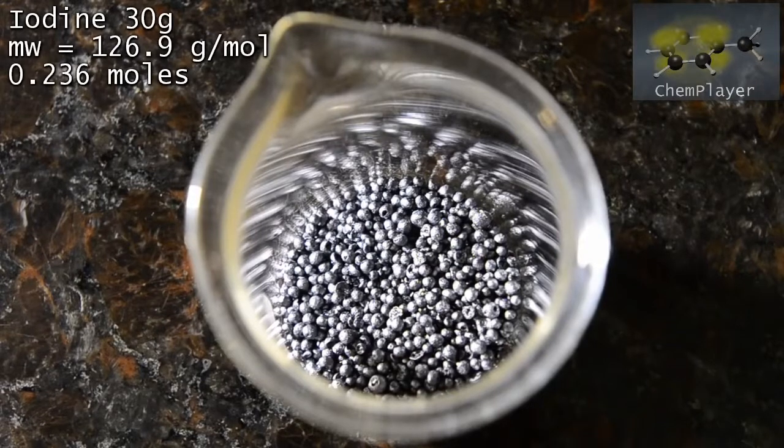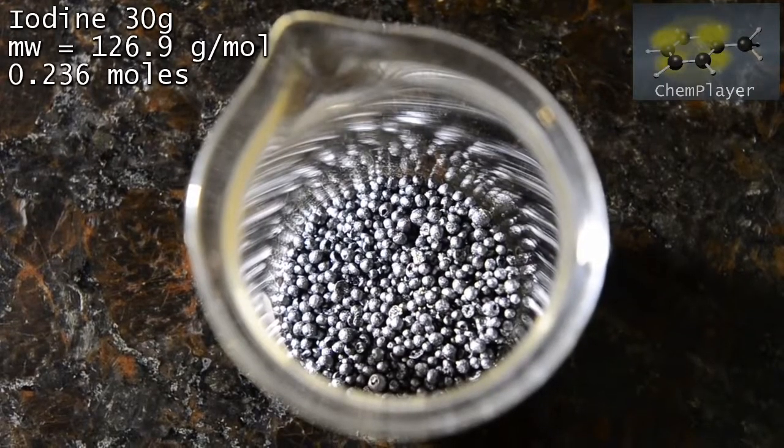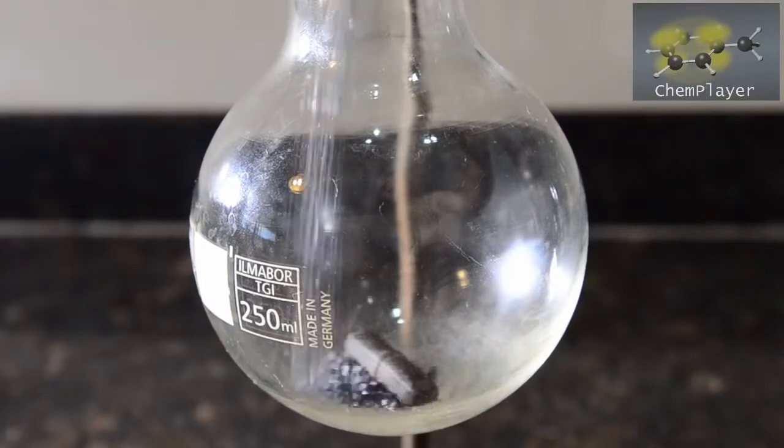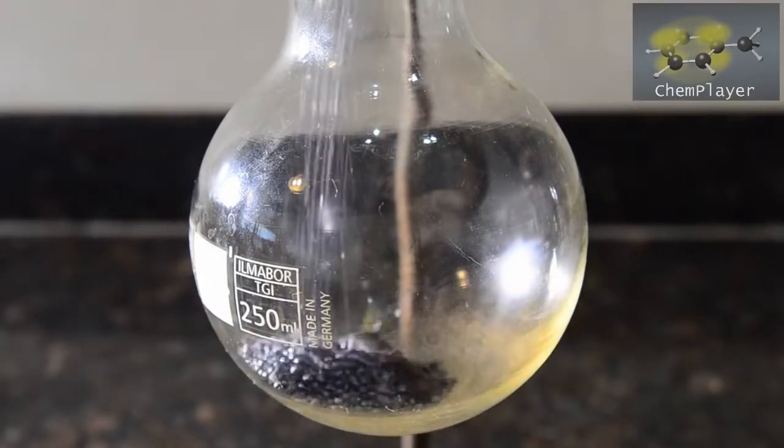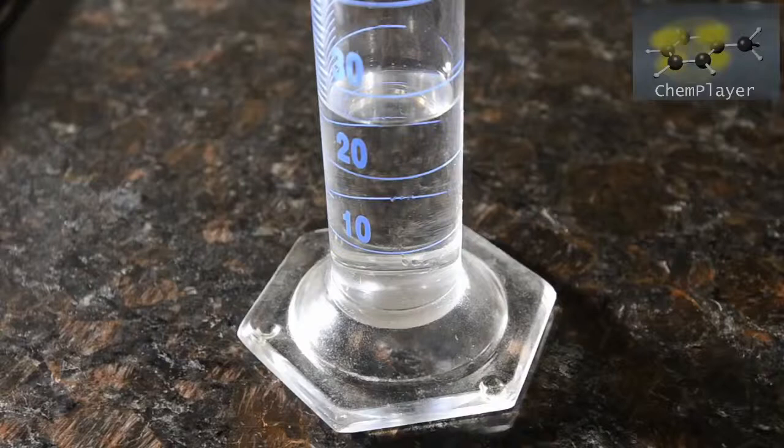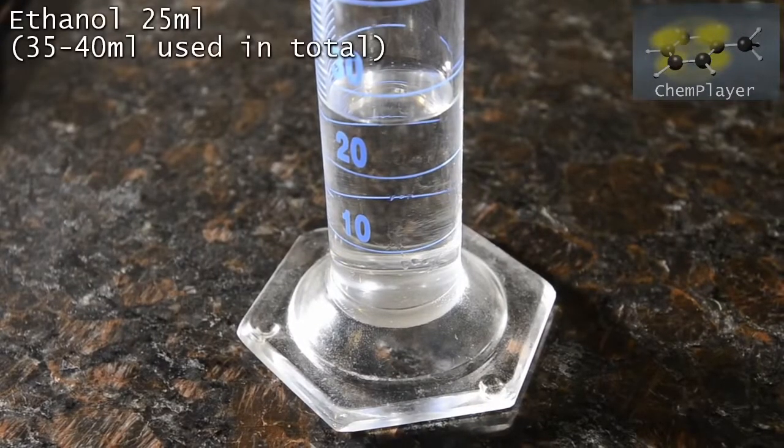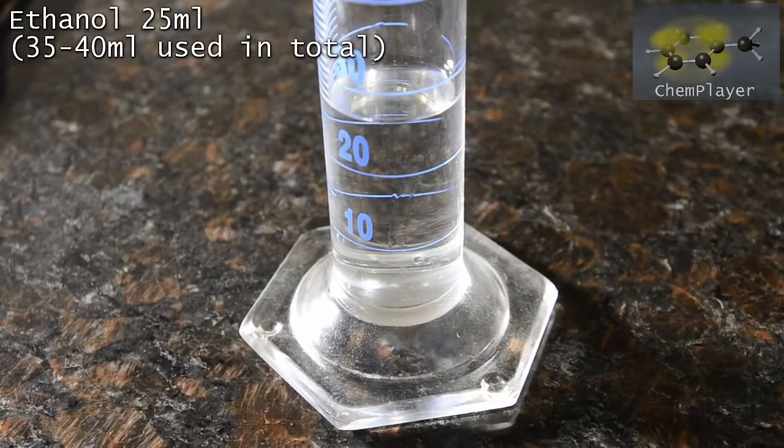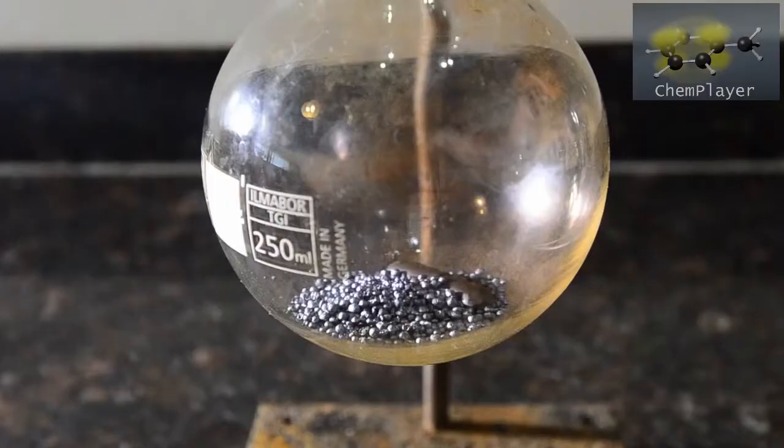We're starting with 30 grams of solid iodine, placing it in a dry 250ml flask equipped with a magnetic stir bar. We're going to start off with 25ml of ethanol to see how this goes. The stoichiometric amount we need for the reaction is about 14ml, but we'll use an excess. Let's get this into the flask.